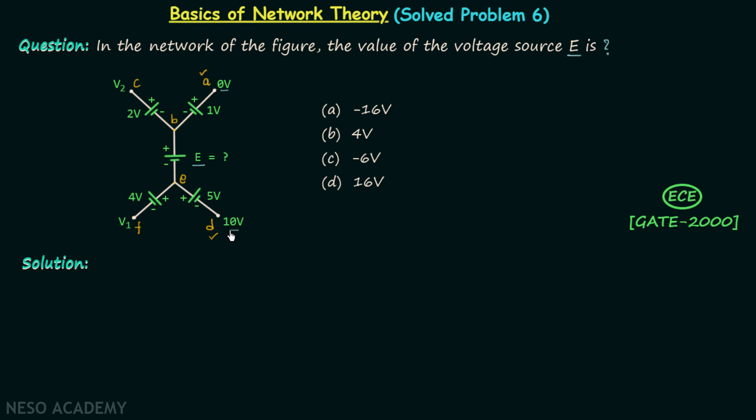But at C and F we don't know the values of the potential; we have unknowns. Therefore, in order to obtain the value of E with just one equation, we will apply KVL from A to D.